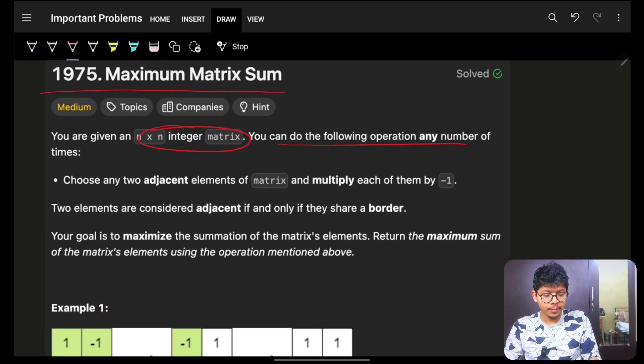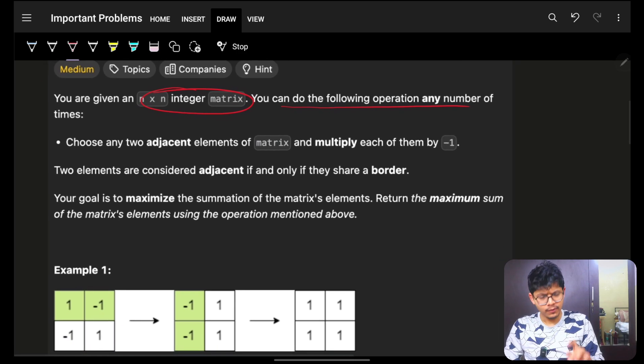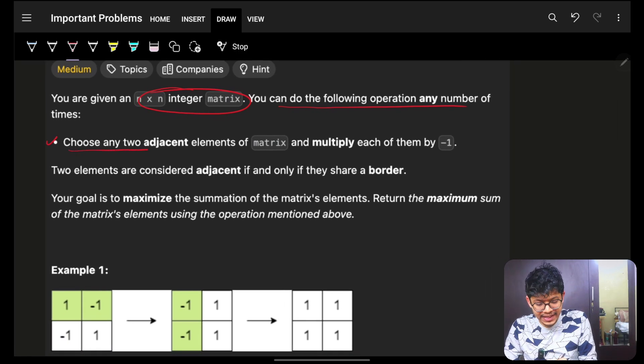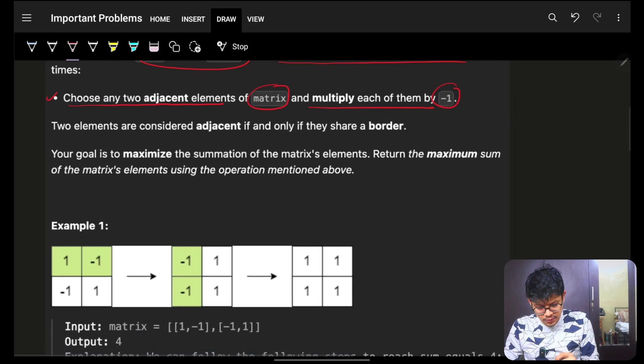Now, you can do the following operation any number of times. What is the operation? Operation is choose any adjacent element of matrix and multiply each of them by minus 1. Which means that I, let's say, choose these two. I made them minus 1, minus 1. Okay.